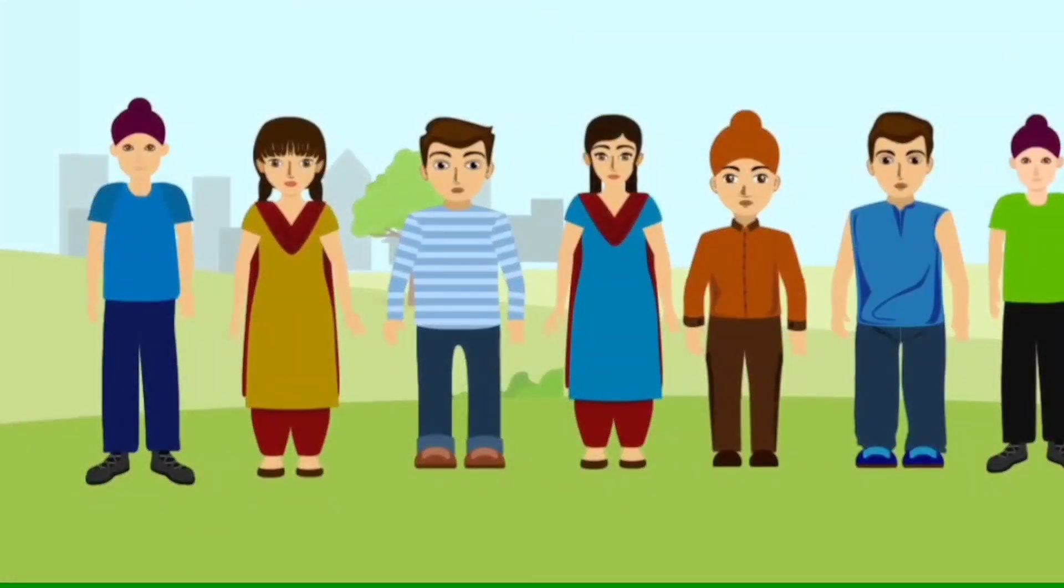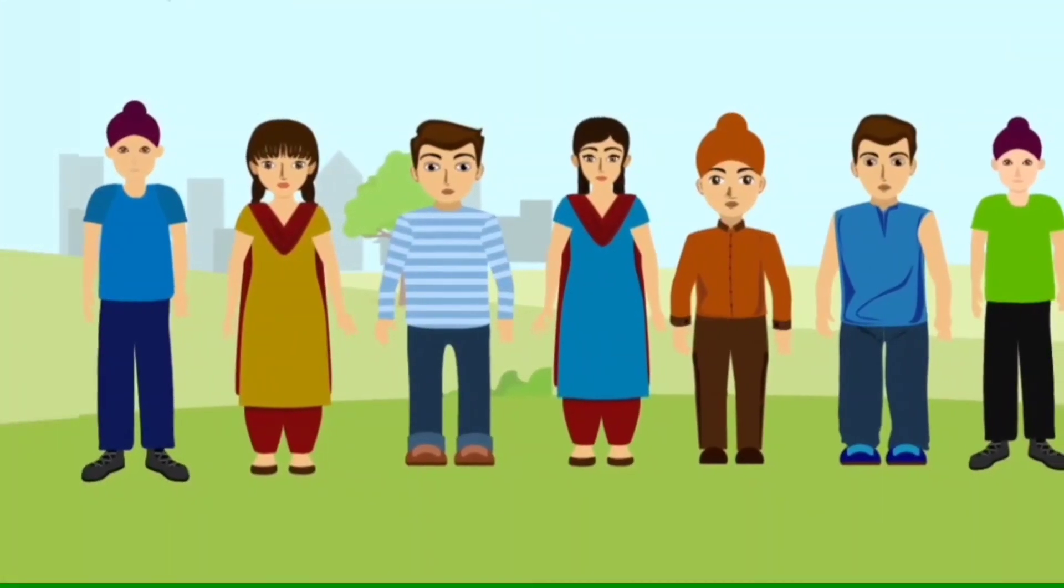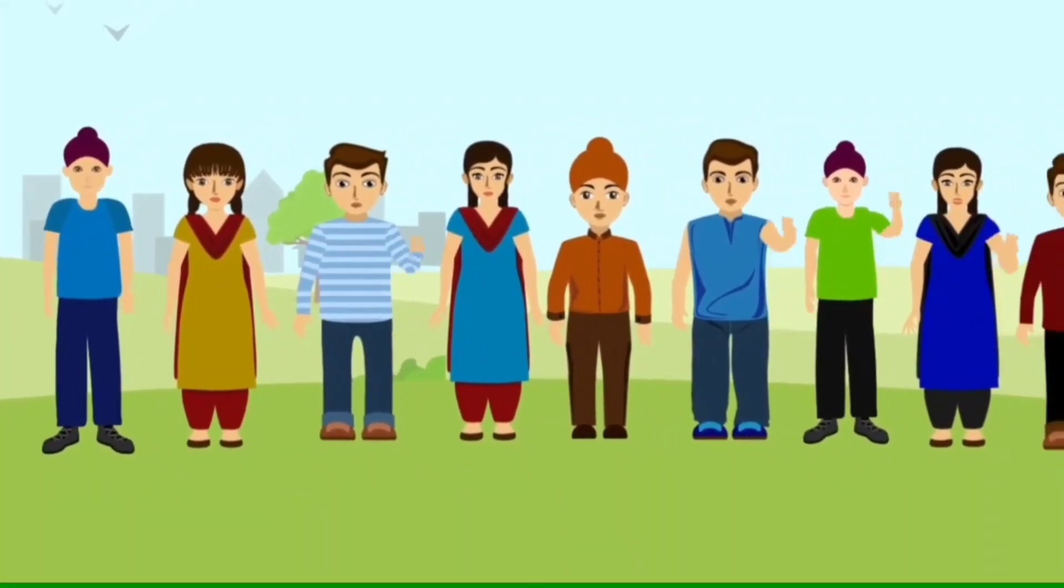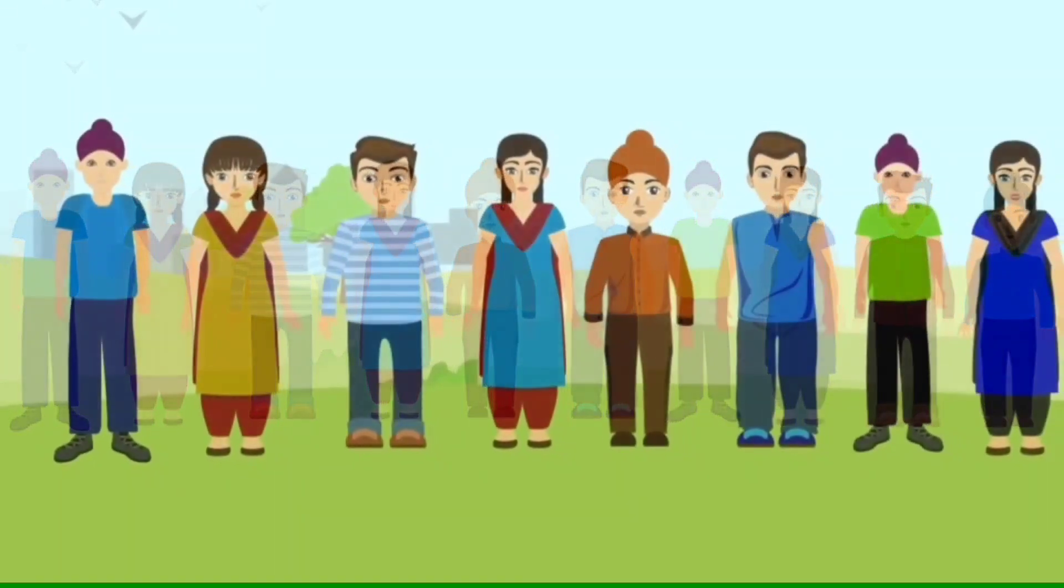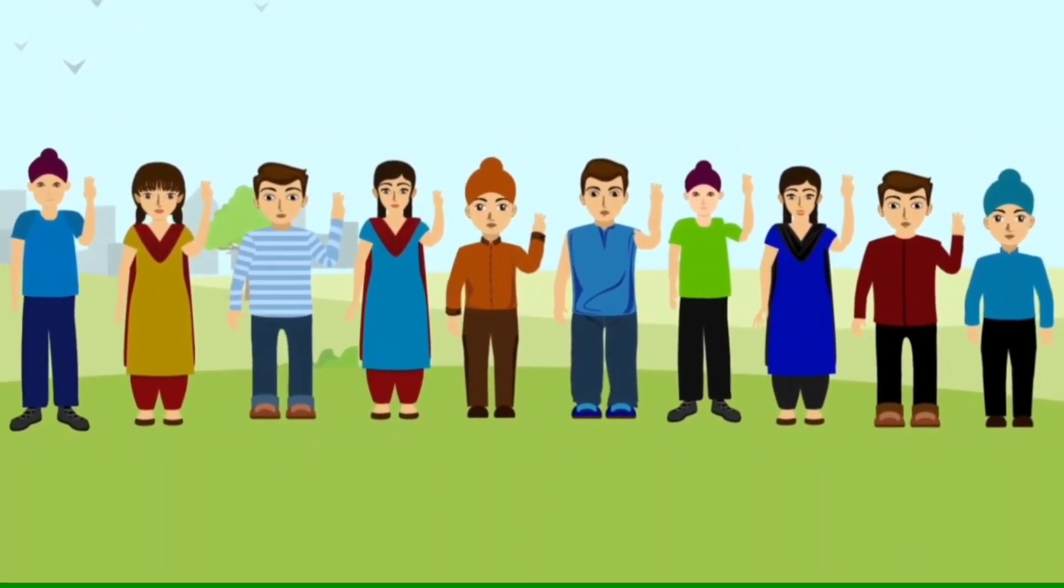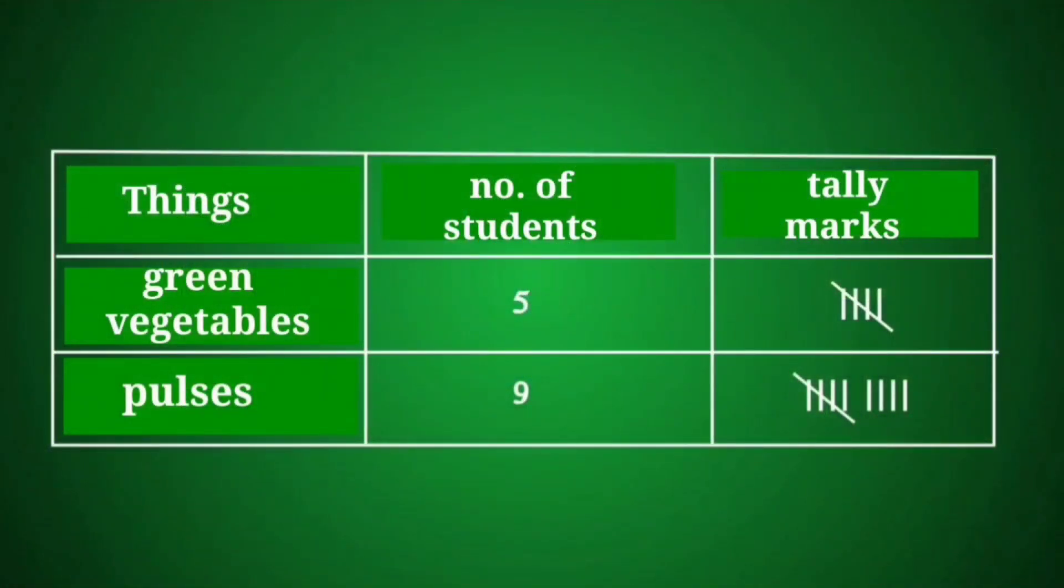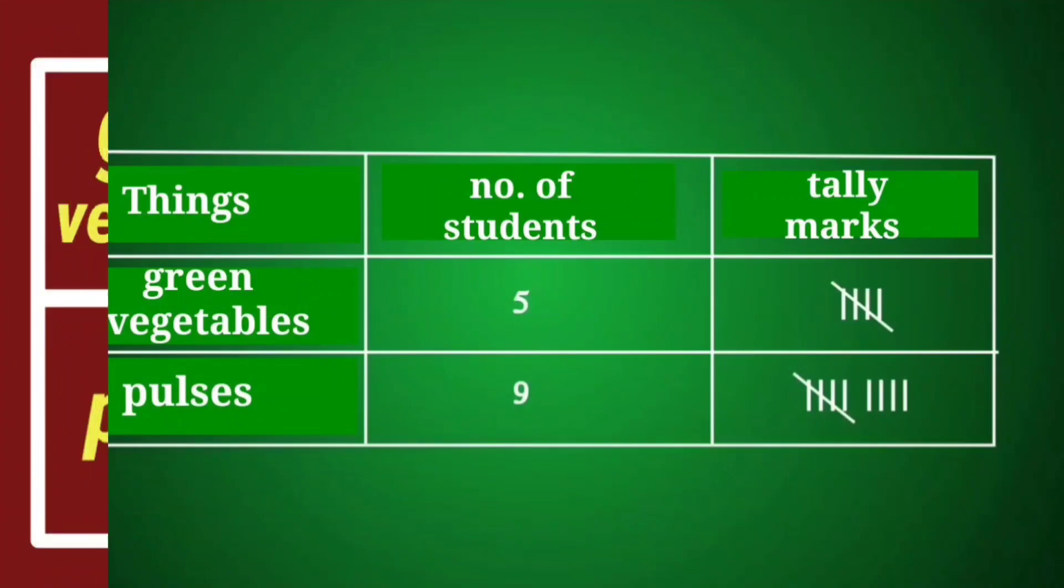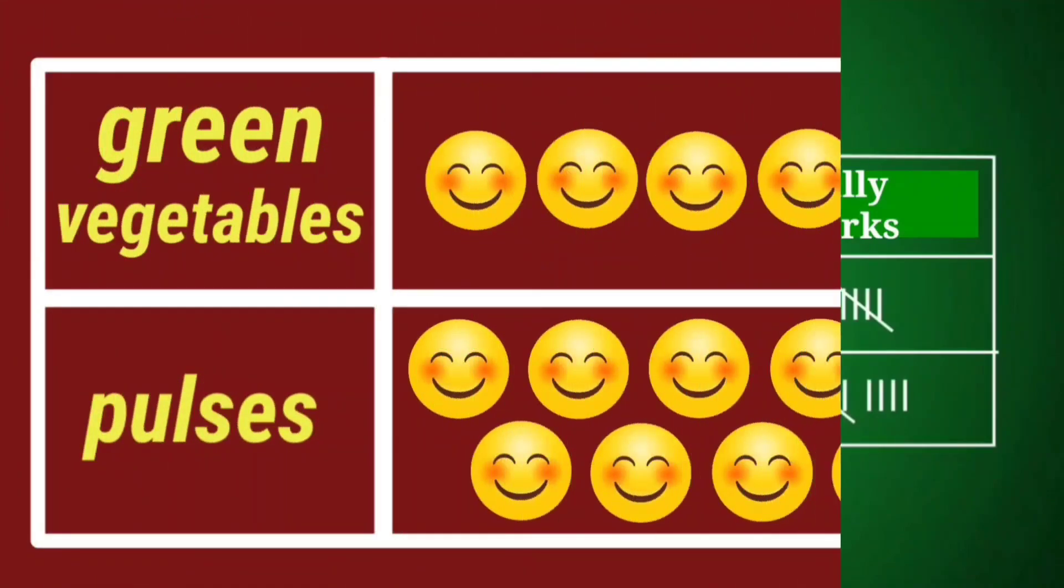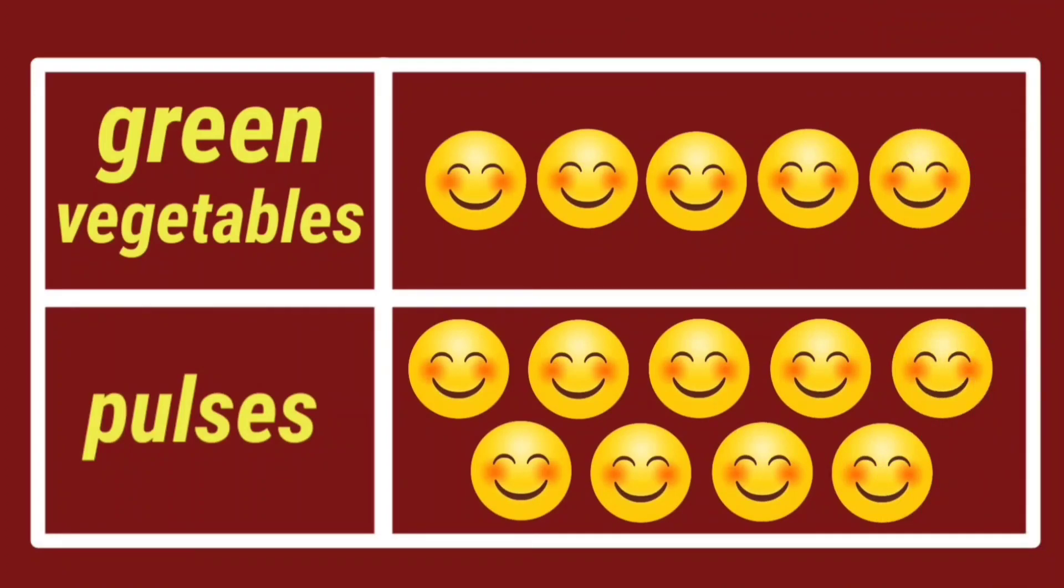Dear students, how many of you like to eat green vegetables? And how many of you like pulses? This data of your class can be organized in the form of a table that you have already studied about in your previous class. And the same data can be represented in the form of pictures or symbols.